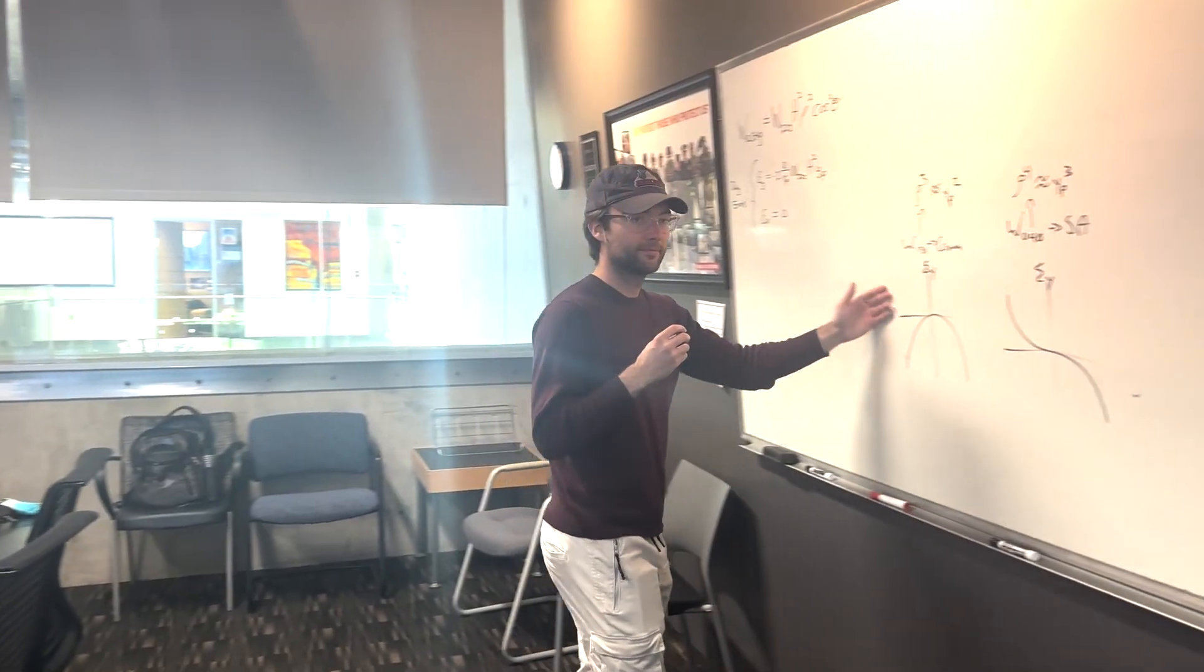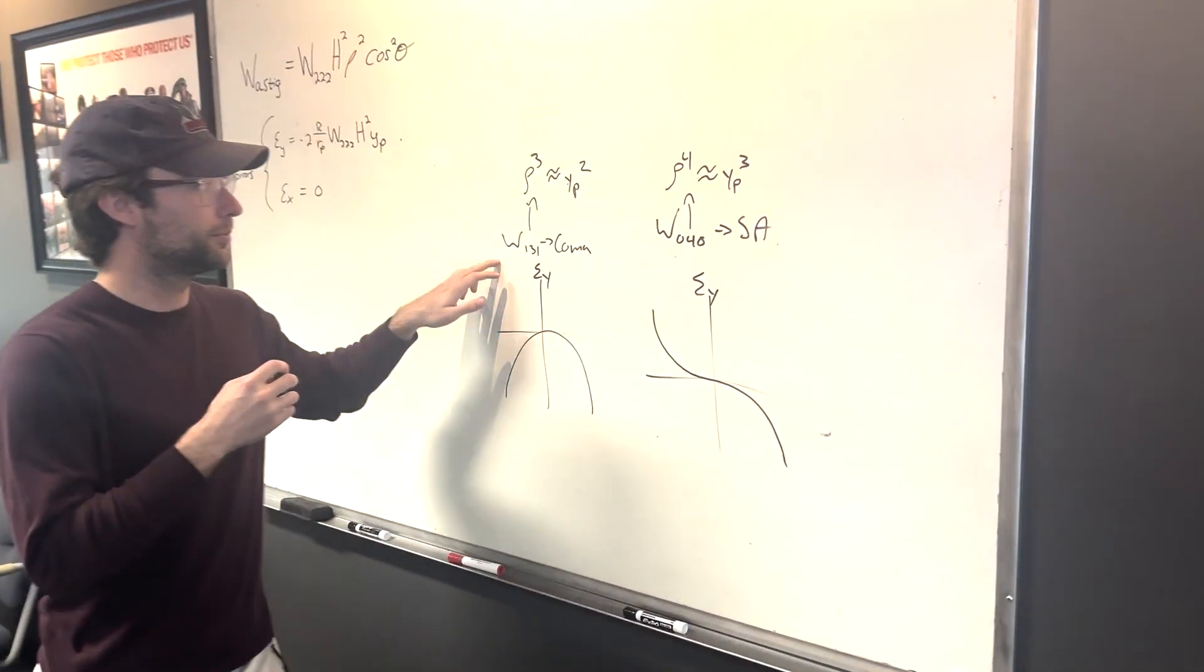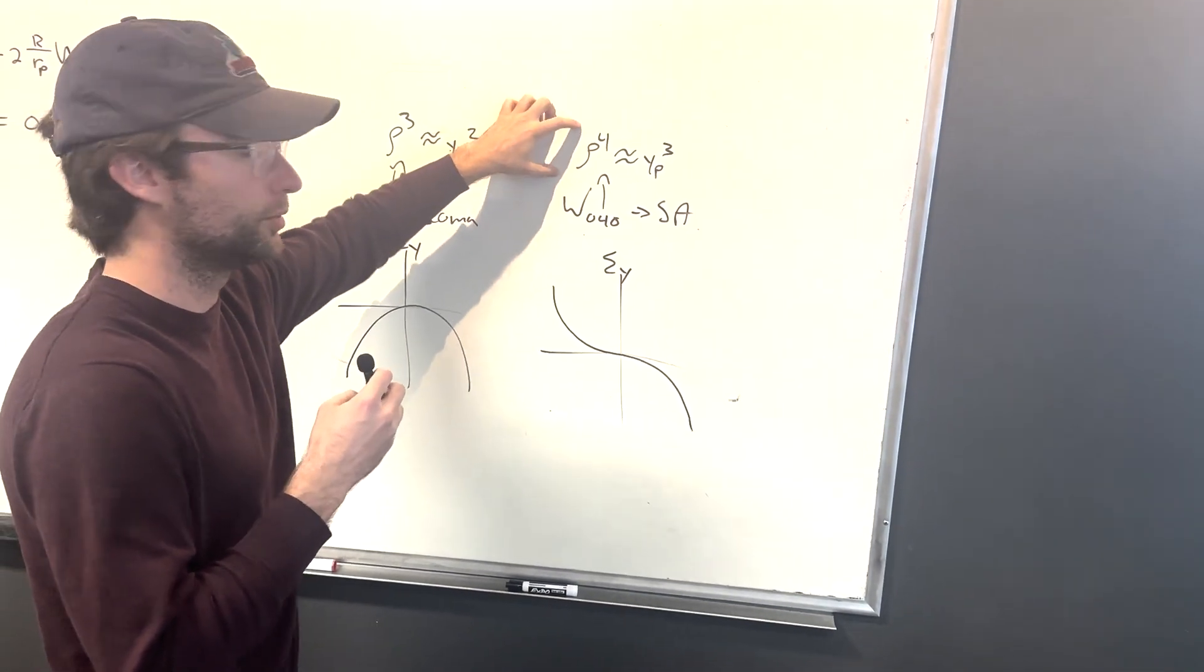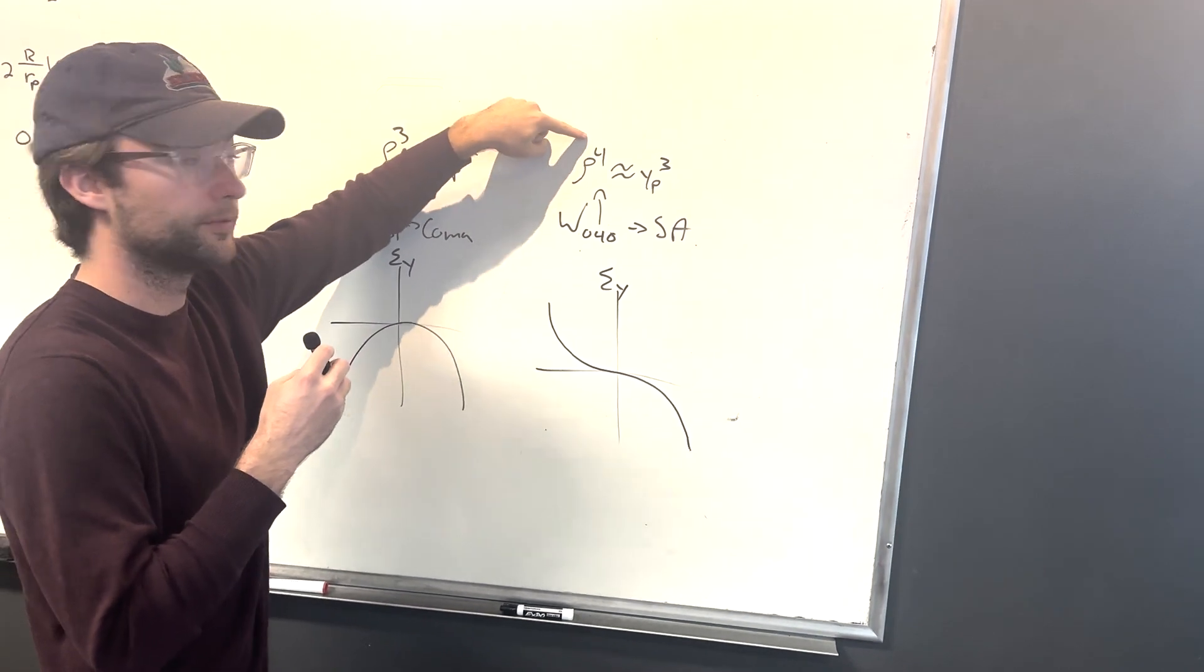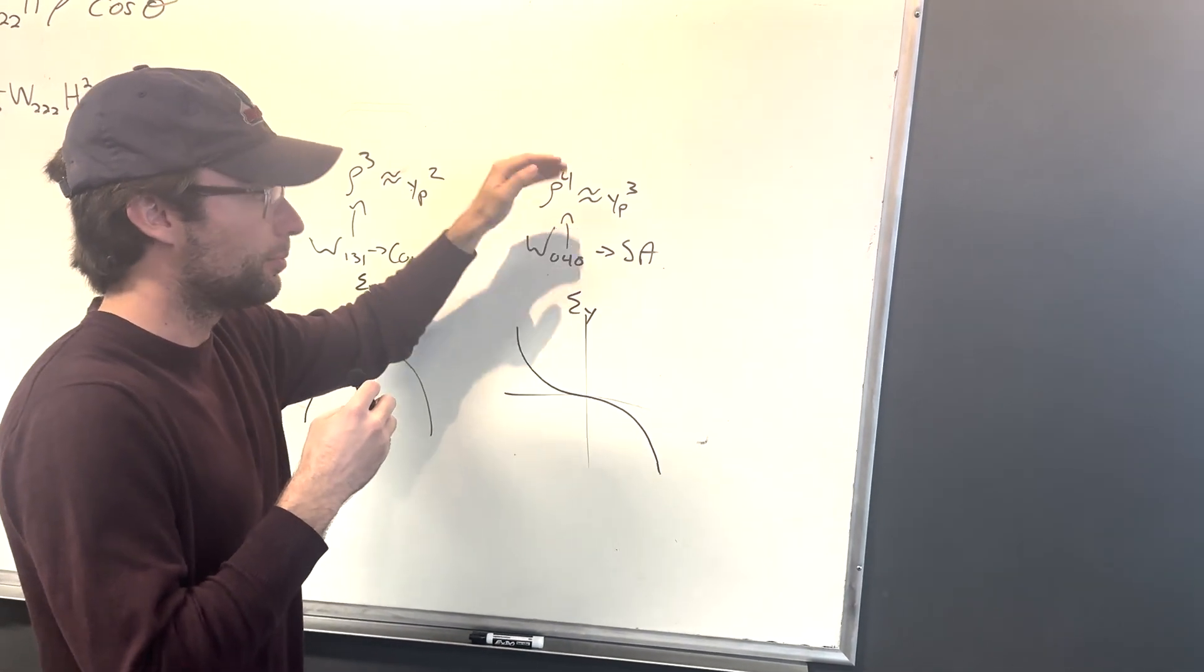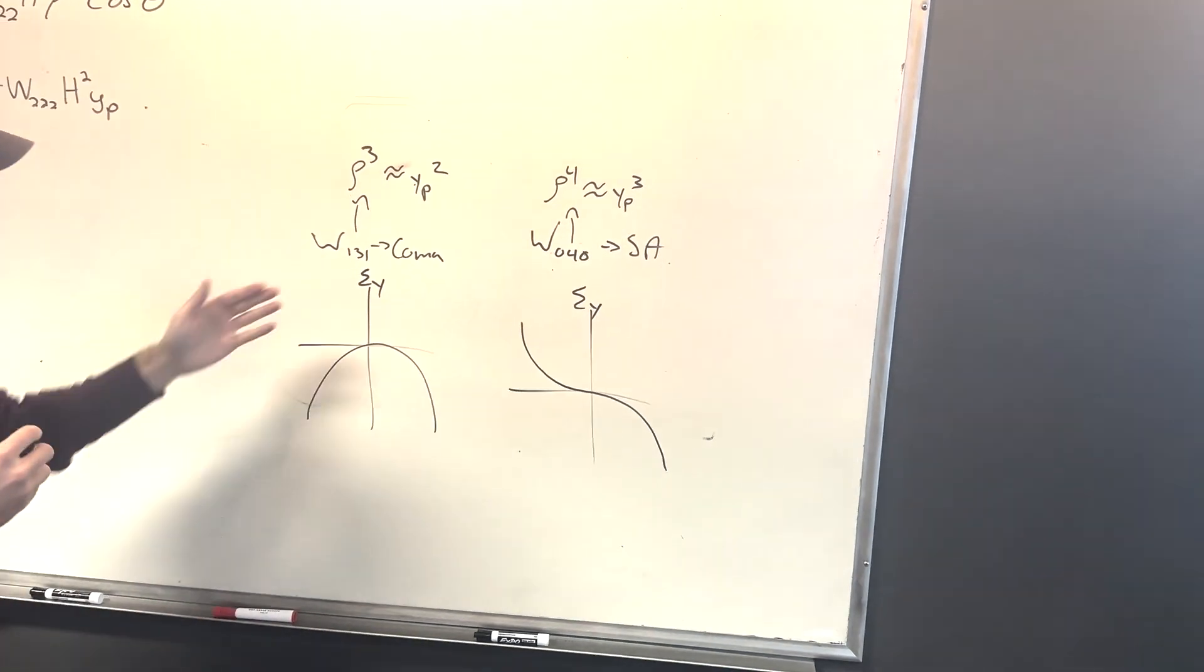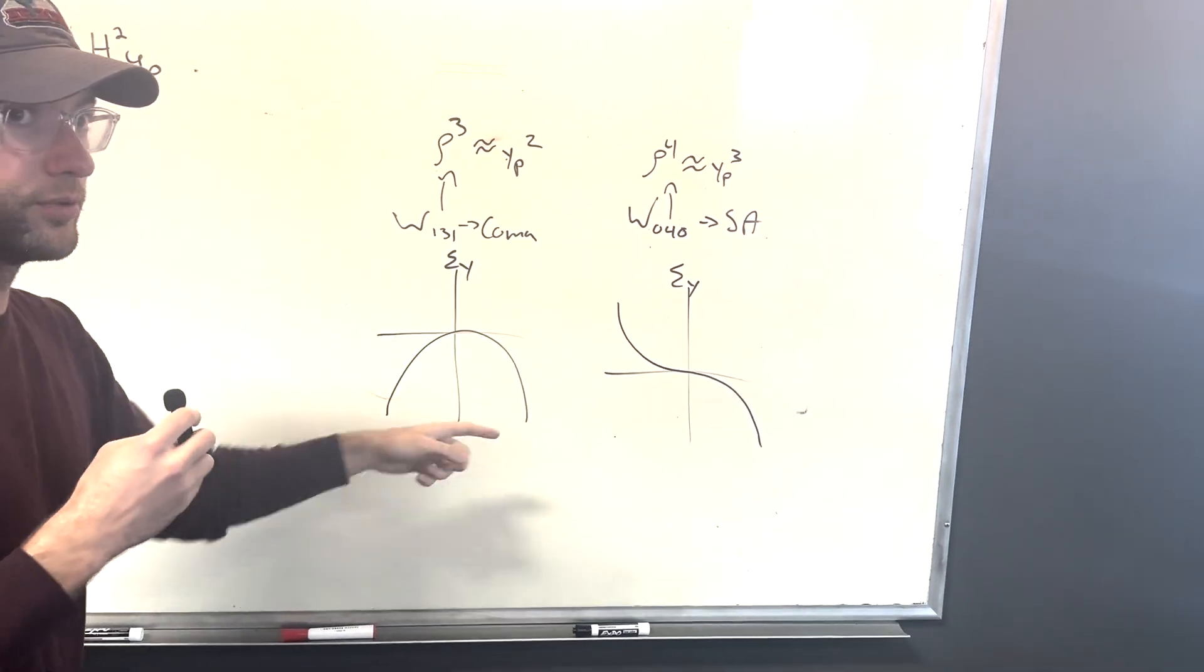Let's show a little tip and trick on how we know if it's going to vary linearly, quadratically, or has a cubic function. When we have our W040 or W131 for coma, you're going to take this middle number here, which represents your rho or your pupil dependency. So this 4 represents rho to the 4th. You're going to subtract 1 from the exponent to get approximately equal to Yp cubed, meaning it's going to be a cubic function. You can do the same for coma, where you have a rho cubed. Now you have to reduce that by 1 to get Yp squared, and now you know it's quadratically.